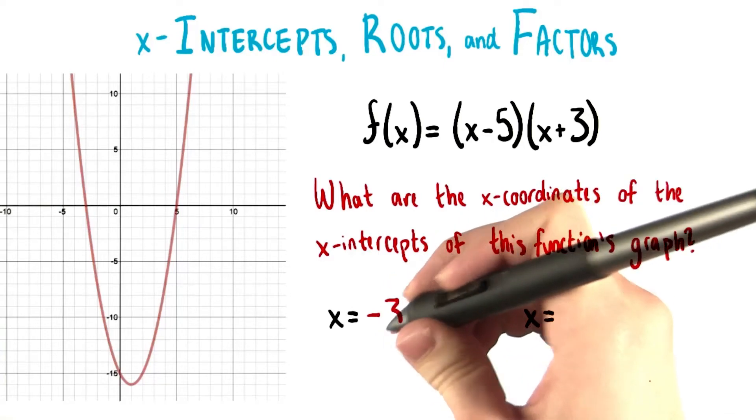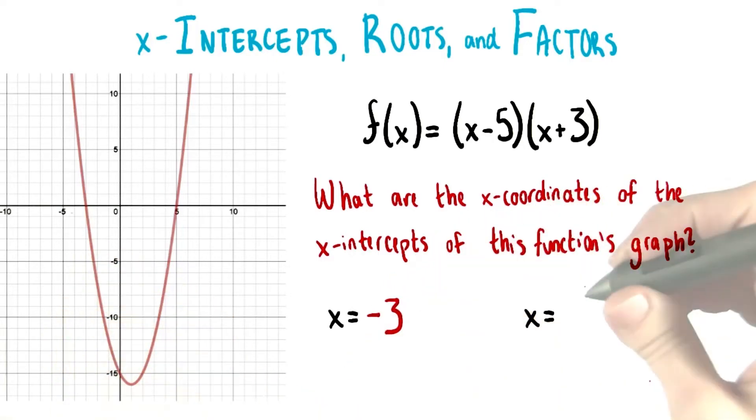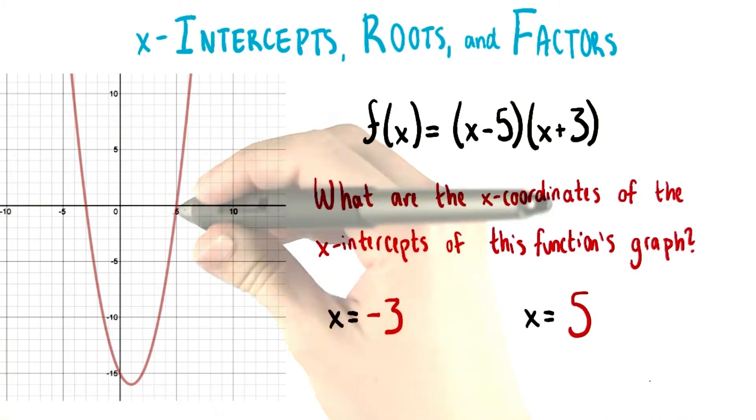There's one x-intercept whose x-coordinate is negative 3, and there's one whose x-coordinate is 5.